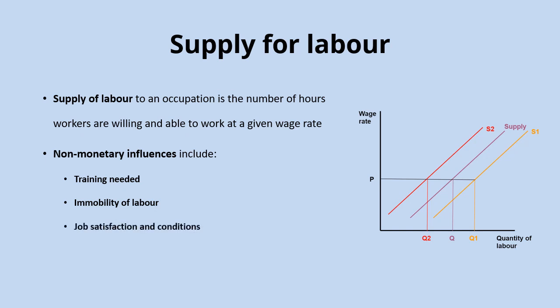Job satisfaction and conditions can have an impact as well. Greater job satisfaction and better working conditions will increase the supply of labour to that industry. Some occupations pay quite poorly but attract many workers because the conditions are so good and there's really good job satisfaction — that's likely to shift the curve further to the right. Finally, the opportunity cost of labour refers to the other things people could be doing with their time instead of working. The greater the opportunity cost — the more alternatives there are to working — the lower the supply of labour is likely to be, pushing that supply curve further to the left.